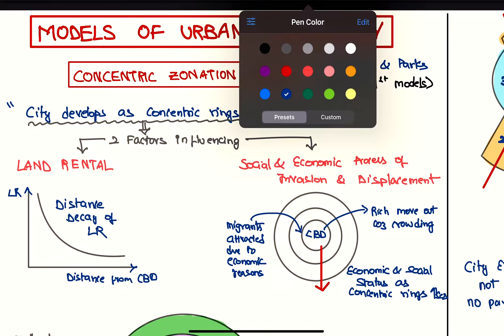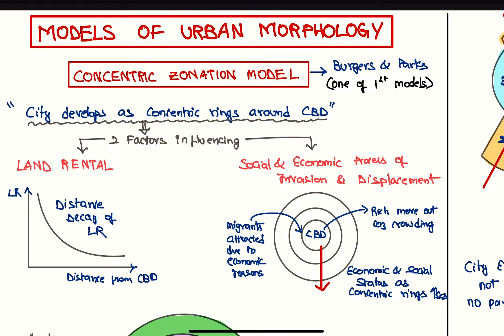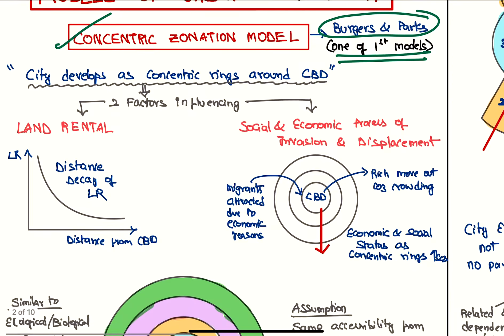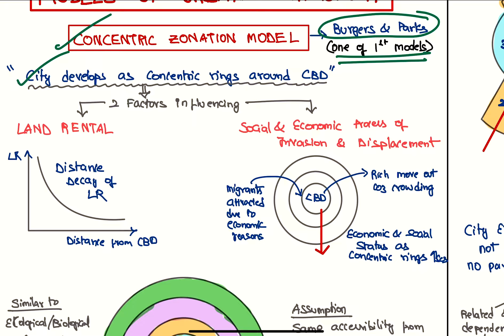The models of urban morphology - the first one is the concentric zonation model given by Burgess and Parks, one of the very first models. According to them, a city develops as concentric rings around the CBD. The two main factors for this are: first, land rental, so distance decay of land rental as we move away from the CBD, the land rent keeps decreasing so people want to move away from the CBD for lower rents.